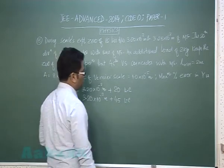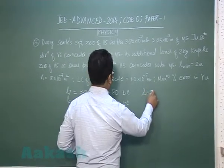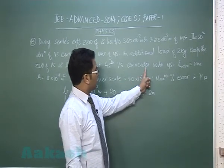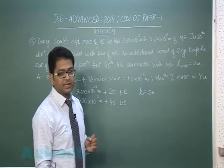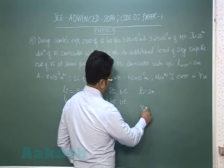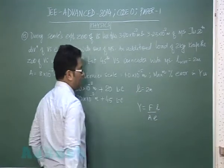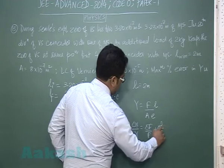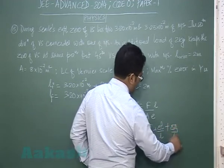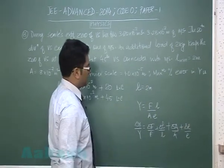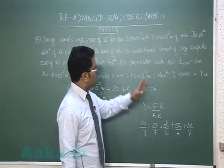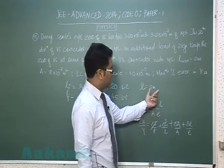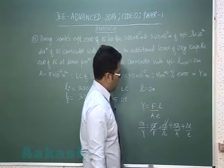Length of the wire is given to be 2 meters without any load. Cross-sectional area has been given. Least count of vernier scale is 10^-5 meter. We need to find maximum percentage error in Young's modulus. Young's modulus is F/A × L/ΔL where ΔL is the elongation. The load is given without any error as additional load 2 kg, so ΔF would be 0.